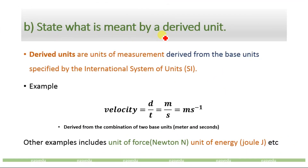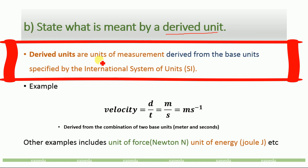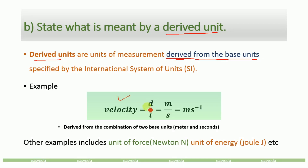Part B: what is meant by derived units? Derived units are units that can be derived from the base units — they are not fundamental units. For example, the unit of velocity is meter per second (d divided by t). Meter per second is a combination of two base units, meter and second, so it is a derived unit derived from the base units of length and time.